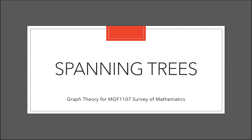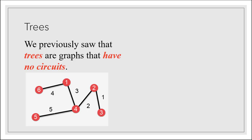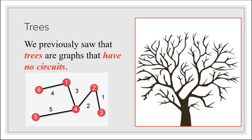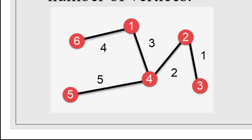In this video, we're going to talk about spanning trees. We've previously seen that trees are graphs that have no circuits. Much like a real tree, a graph theory tree has branches, but it doesn't loop back around and reconnect to itself. The number of edges in a tree is one less than the number of vertices. As in this example, where the graph has six vertices, but only five edges. If we were to add a sixth edge connecting any of the existing vertices, we would create a circuit and we wouldn't have a tree.